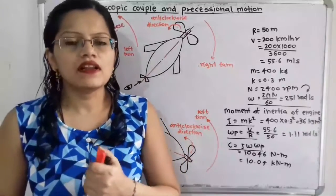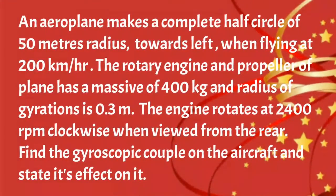Now I will read the given problem. An aeroplane makes a complete half circle of 50 metre radius towards the left when flying at 200 km per hour. The rotary engine and the propeller of the plane has a mass of 400 kg and a radius of gyration of 0.3 metre. The engine rotates at 2400 rpm clockwise when viewed from the rear. Find the gyroscopic couple on the aircraft and state its effect on it.